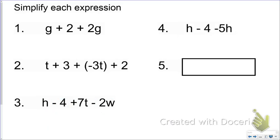Go ahead and try number 4. H minus 4 minus 5H. I've got an H here and a negative 5H. I can combine those to get—that's a positive H and 5 negative H's, so 1 positive H will cancel at 1 negative H, leaving me with 4 negative H's left over. And then that negative 4 here is still just there with nothing to combine with.